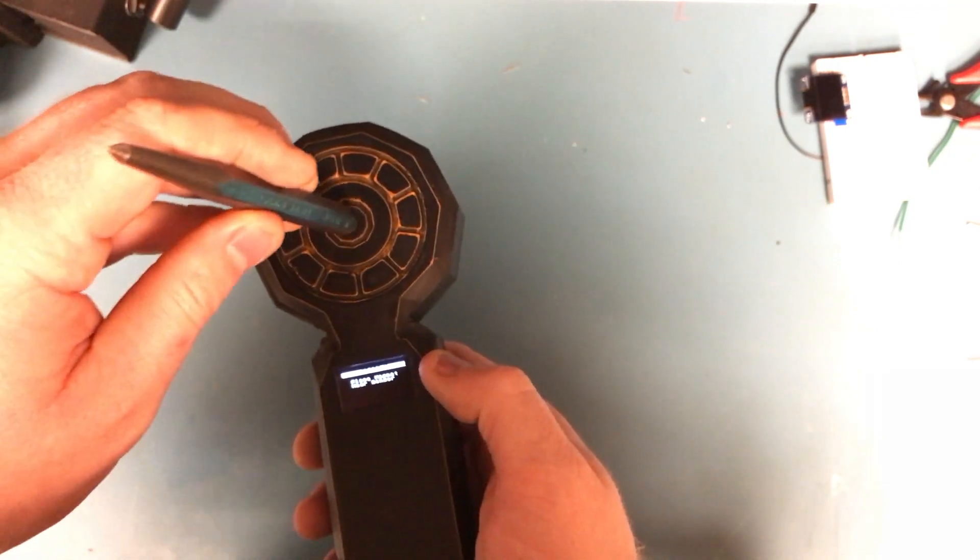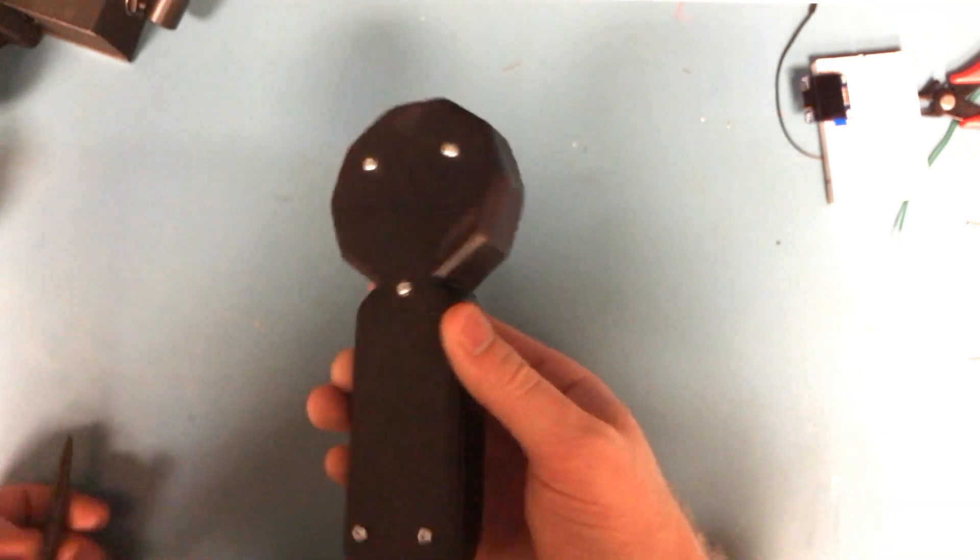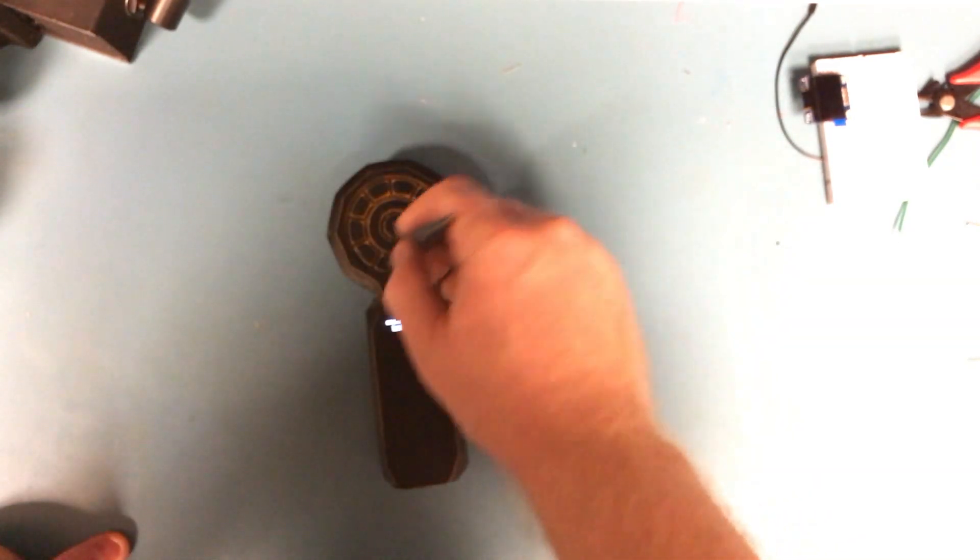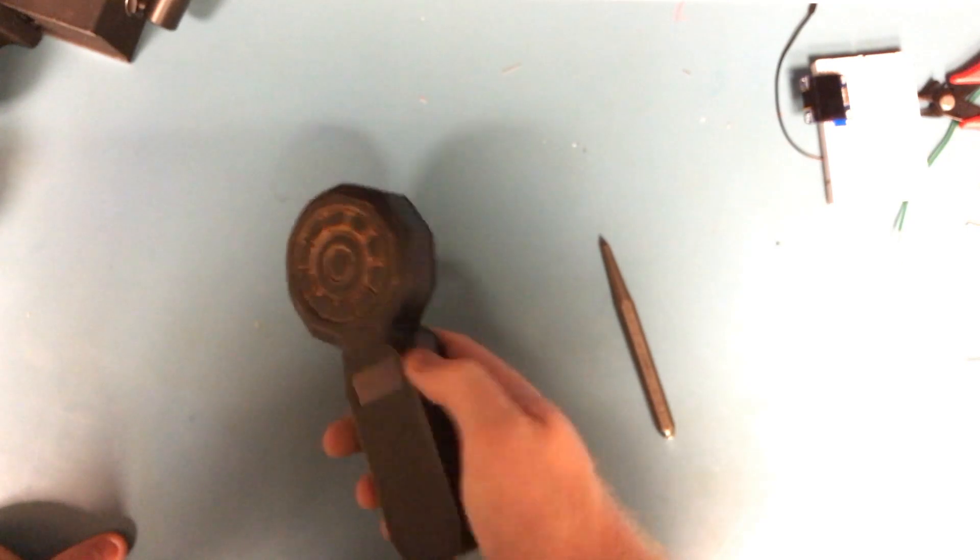So when you're done using the magnet, you just slide it down like an off switch. I really like that application for the latching circuit. I think it's a pretty cool way to turn on and off a product without any visible power switches.